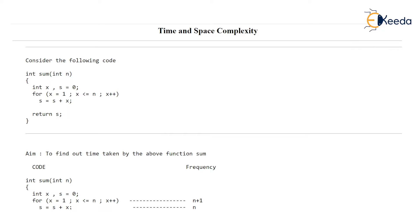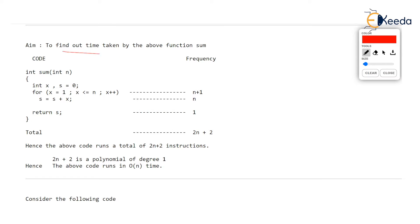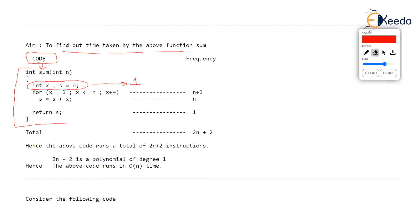Our aim is to find out the time taken by the above function. I have written the function again over here with the frequency of each and every statement. There is a declaration of variables in the code, but notice I have not written the frequency for that. This line runs once in the entire function because declaration is done only once, but I have ignored it — you can consider that one also, but it won't make any difference. You need not count the declarations; anyway, it runs only once.